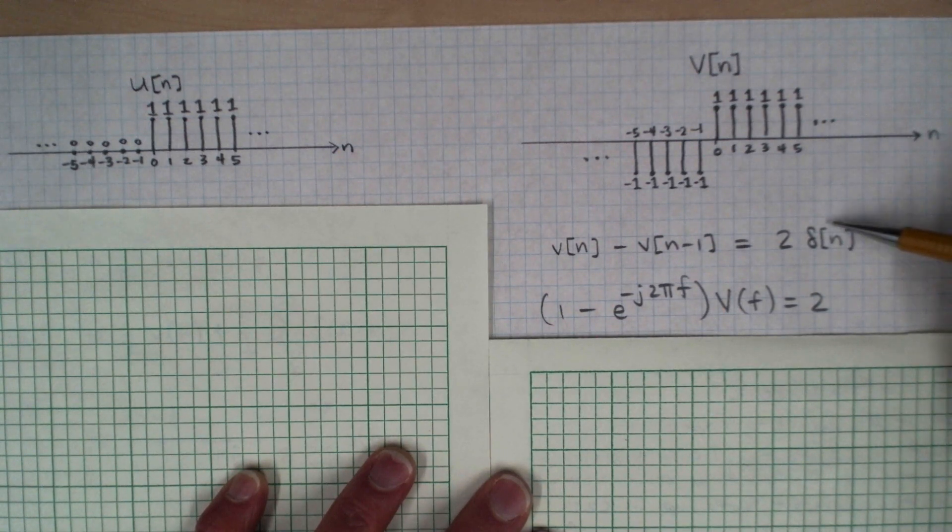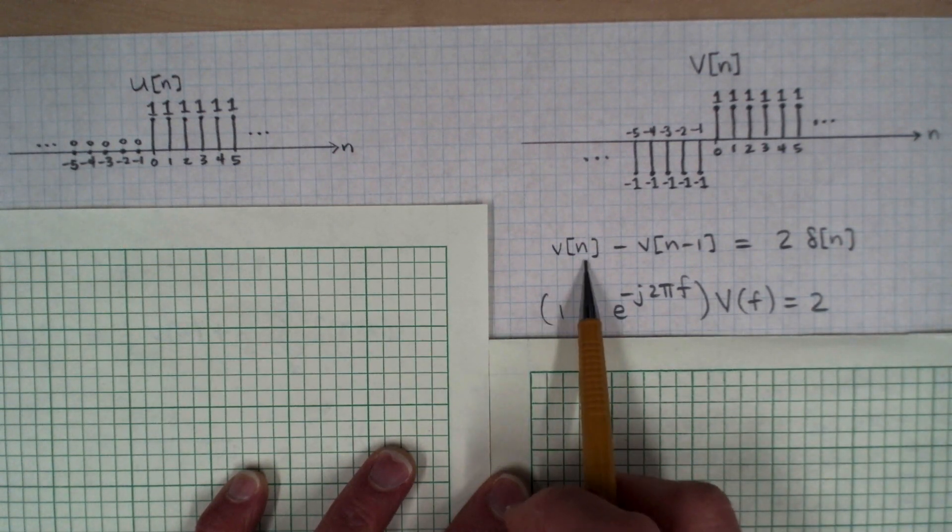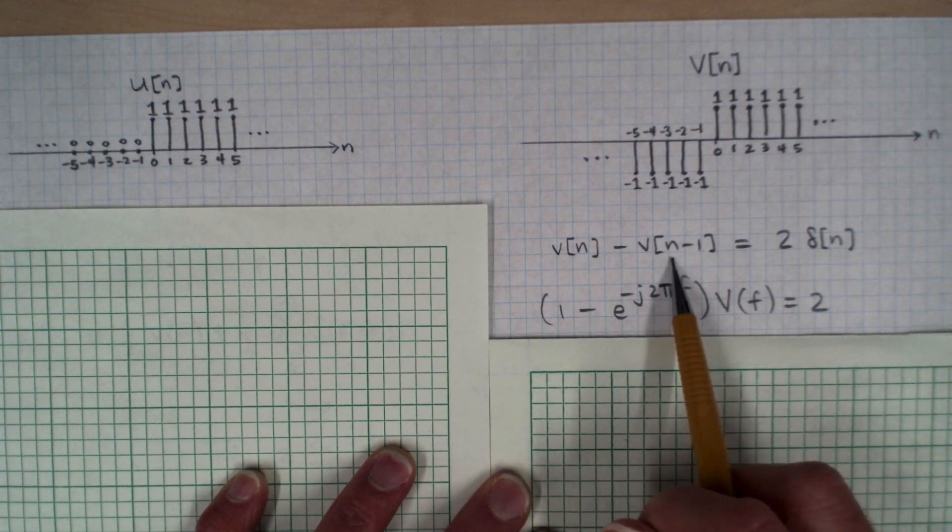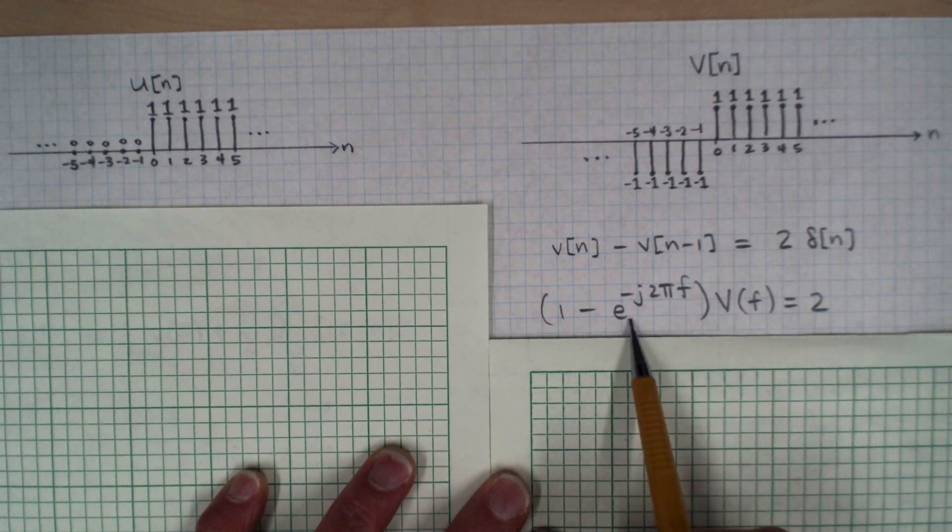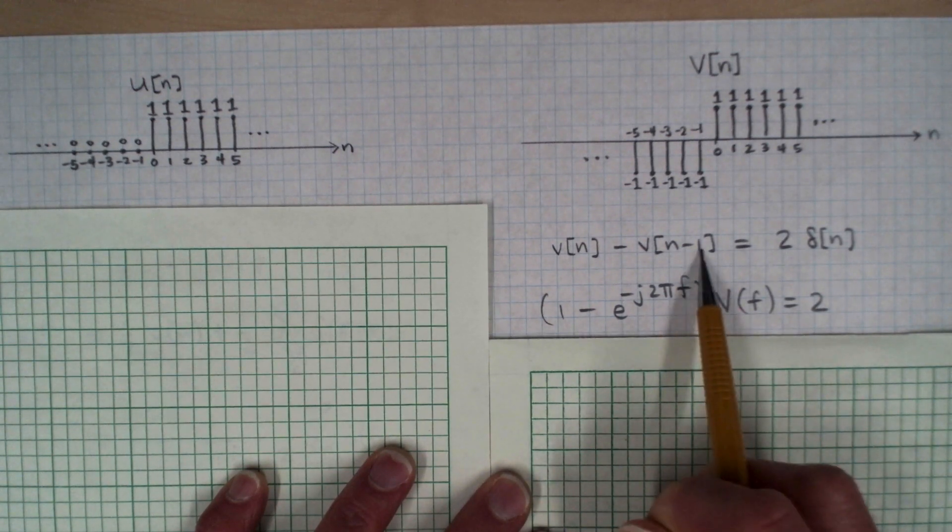Now, on the right-hand side, the Fourier transform of a Kronecker delta is just one. So on the right-hand side, in the transform domain, we have two. And then over here on the left-hand side, the Fourier transform of V_n is just V. And the Fourier transform of a time-delayed version is just V times e to the minus j 2 pi f times 1, which is the delay.